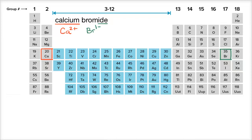So this is going to be, for every one of the calciums, you're going to have two bromides. So it's going to be like this: CaBr2. And there you have it. That is the chemical formula for calcium bromide.